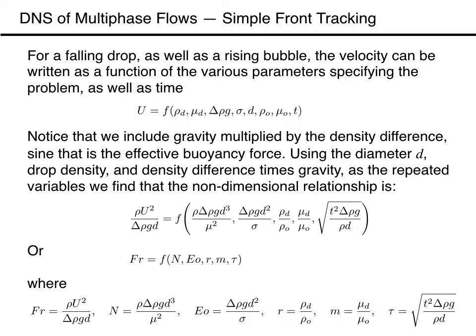For the falling drop, the diameter of the drop, its density and gravity, surface tension and viscosity, as well as the density and viscosity of the ambient fluid, completely specify the problem. Sometimes the density and viscosity of the ambient fluid play smaller roles, particularly if the drop falls only a short distance. The evolution also depends on time. Notice that we include gravity multiplied by the density difference, since that is the effective buoyancy force.